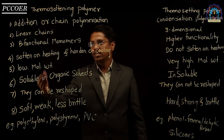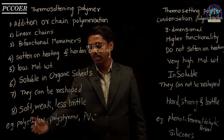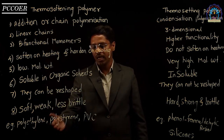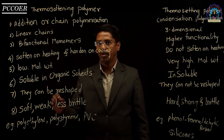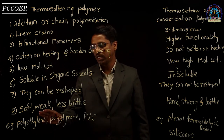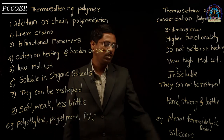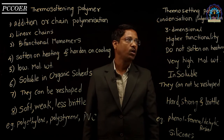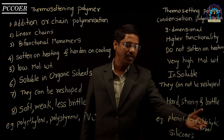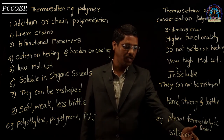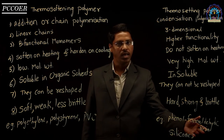Examples of thermosoftening polymers include polyethylene, polystyrene, PVC, and many others — vinyl polymers are generally thermosoftening. Examples of thermosetting polymers include phenol formaldehyde resin, urea formaldehyde resin, silicones, etc.